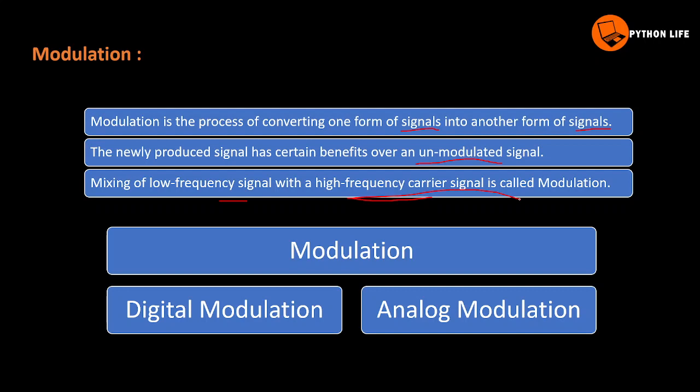High frequency carrier signals are strong and can travel long distances. Modulation is of two types: Digital Modulation and Analog Modulation.